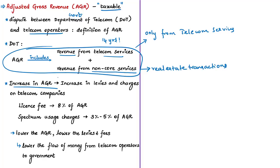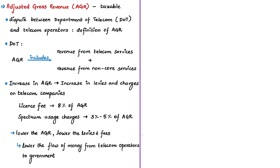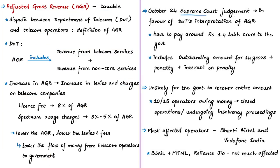Adjusted gross revenue is the basis on which levies, taxes, and certain charges are calculated from telecom operators. Telecom operators pay 8% of AGR as license fee, and spectrum usage charges vary between 3% to 5% of AGR. So the lower the AGR, the lower the levies and fees, and hence lower the money flow from telecom operators to the government. On October 24, the Supreme Court ruled in favor of the Department of Telecommunications' interpretation of adjusted gross revenue.